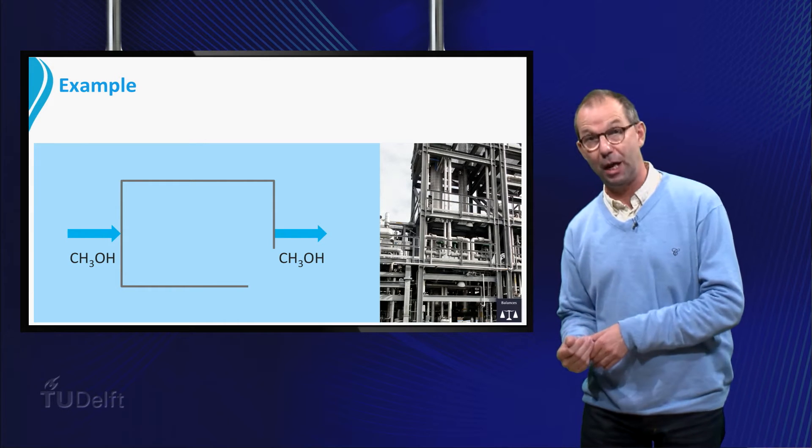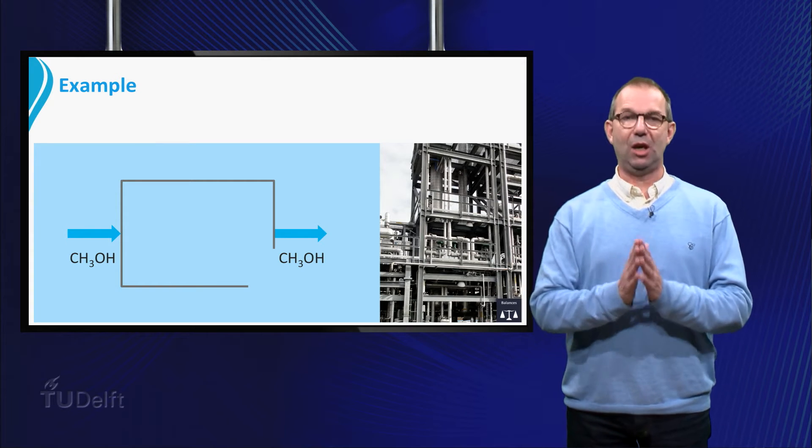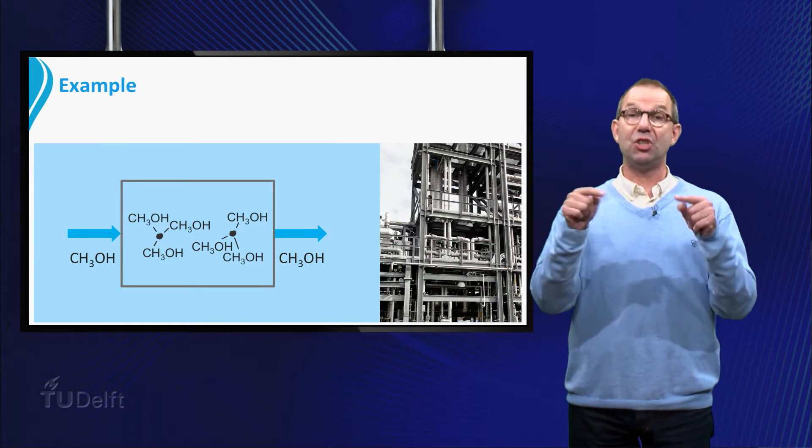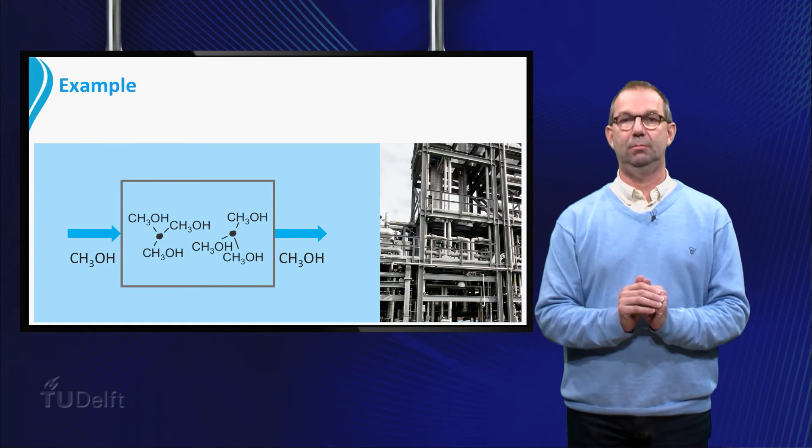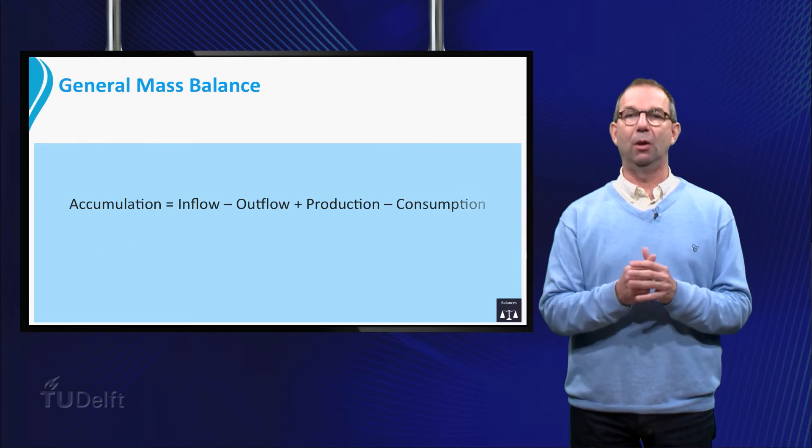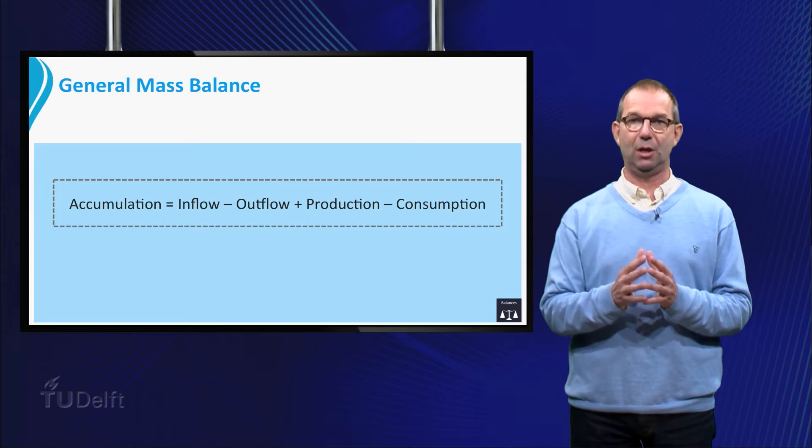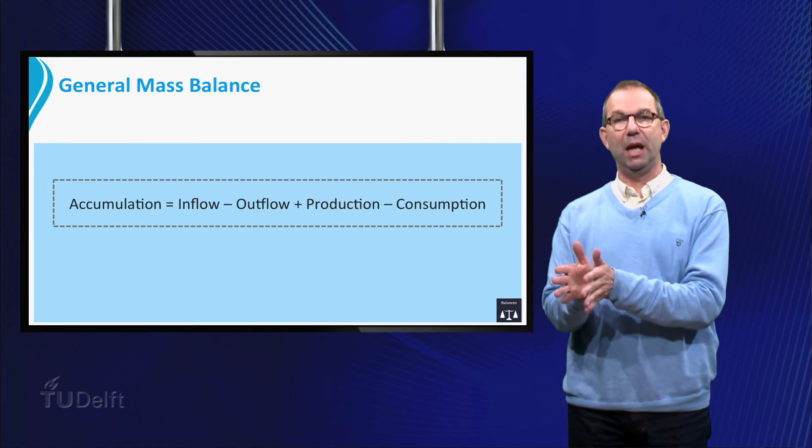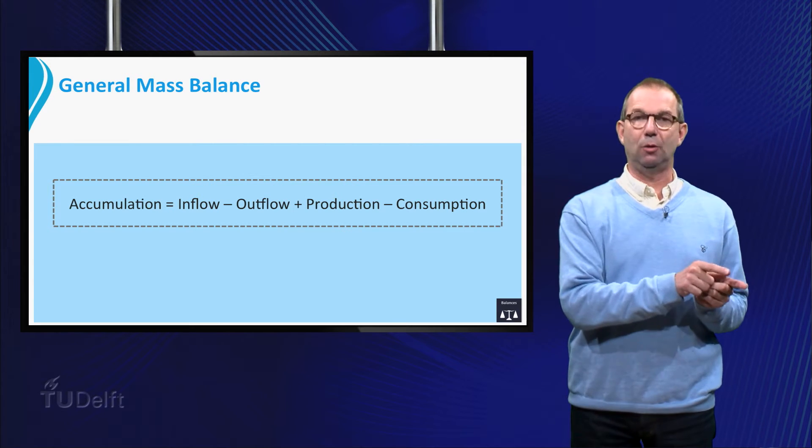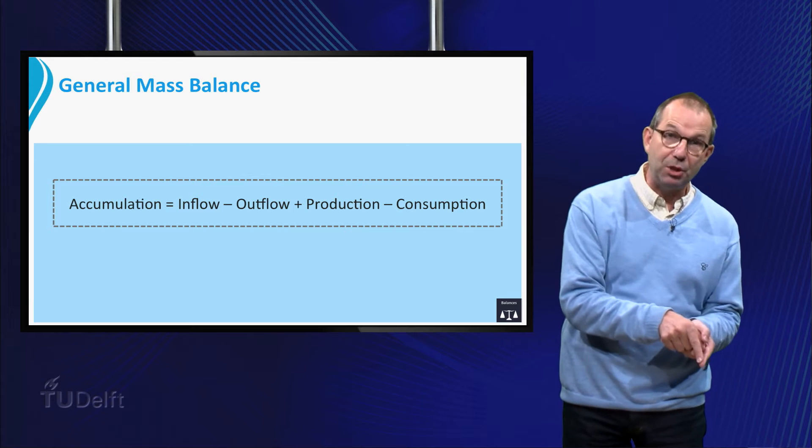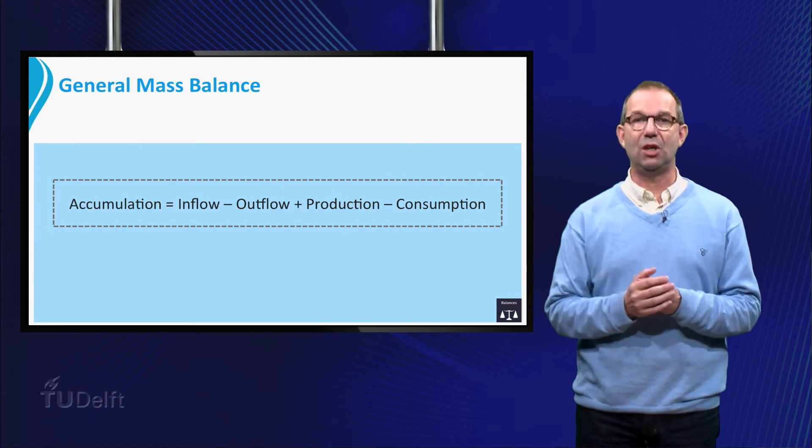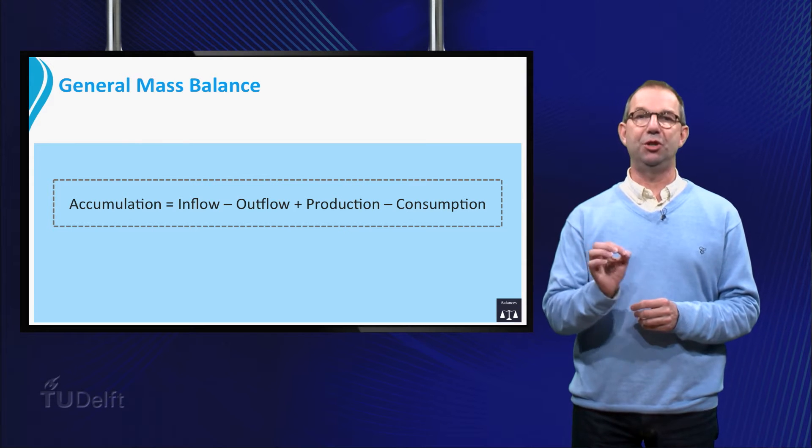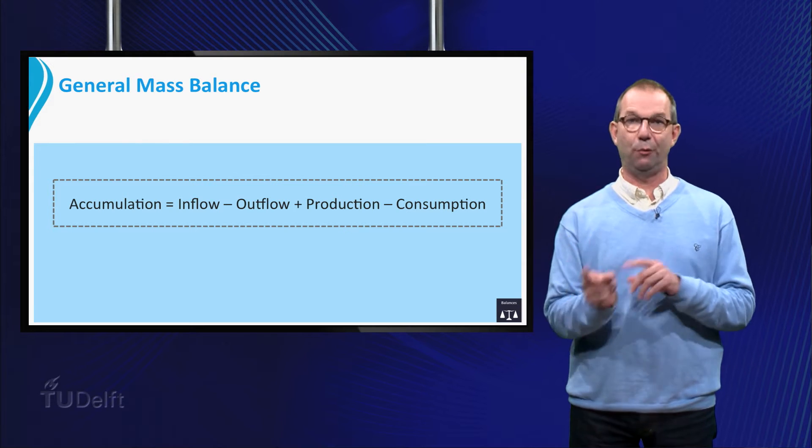In this example, we take that methanol accumulates in the reactor by absorption on an impurity which stays in the reactor. If we generalize this example of methanol to any material or compound, the mass balance of a certain material in a system can be written as: Accumulation equals inflow minus outflow plus production minus consumption. Accumulation means that the material can pile up in the reactor. The mass balance states that this is due to an imbalance between the flows and production.